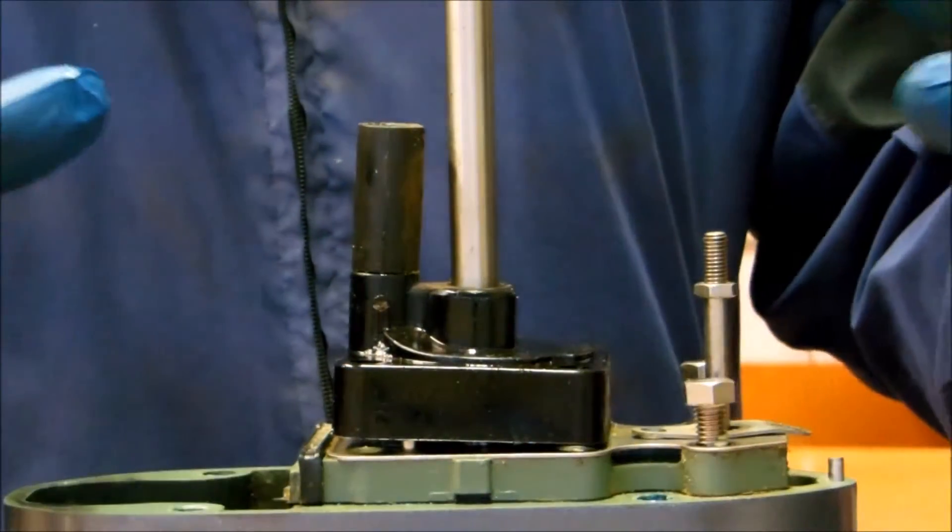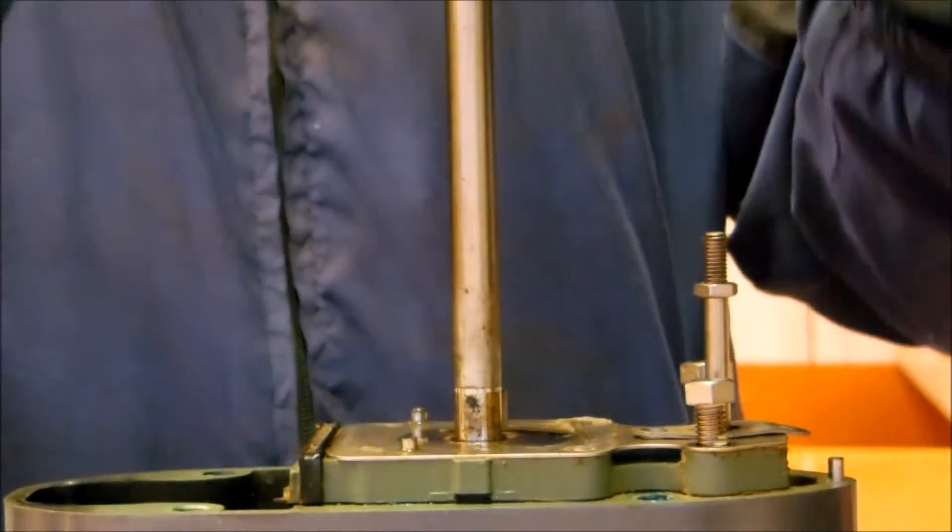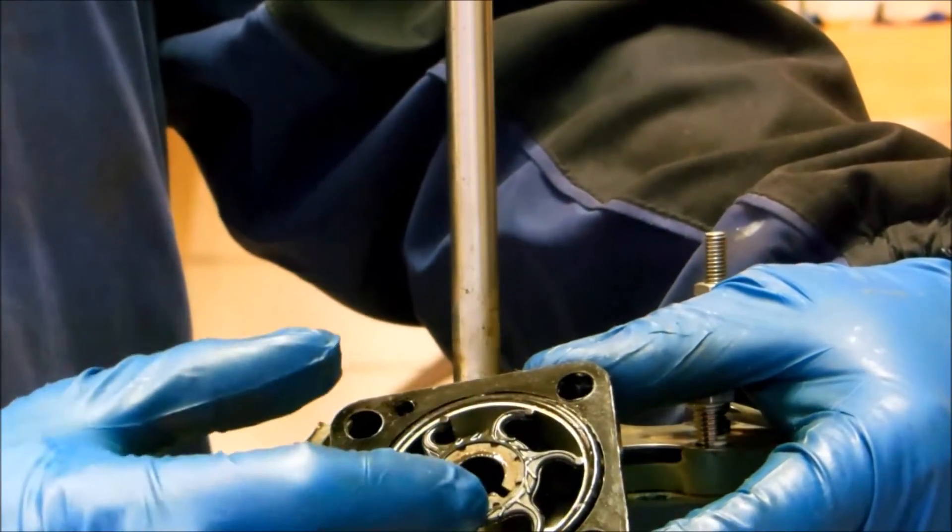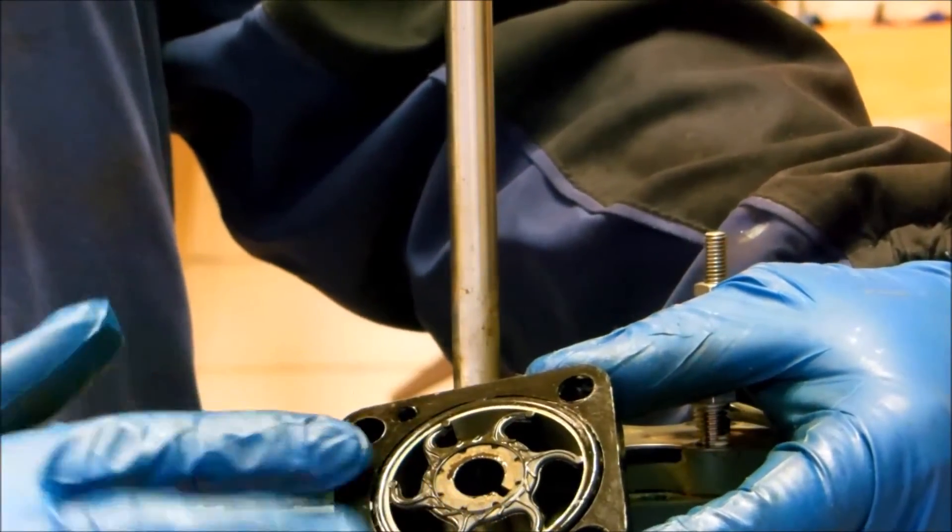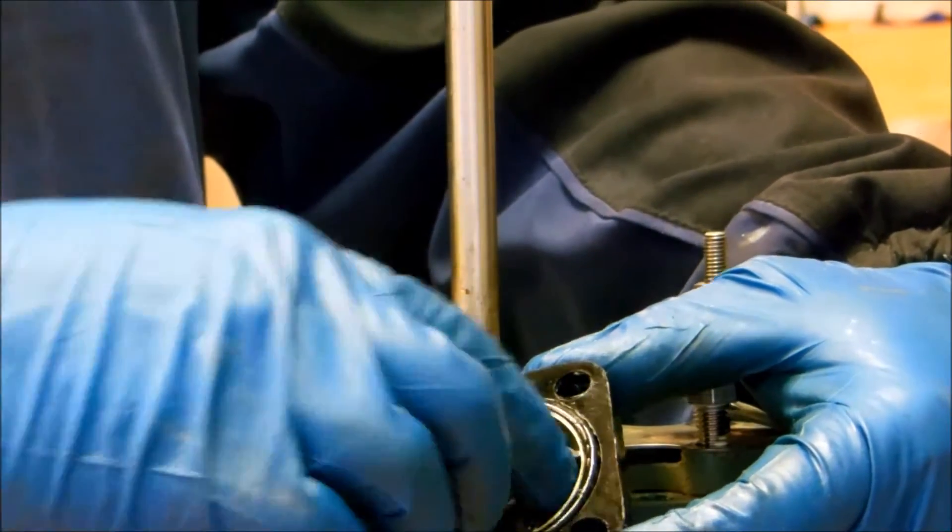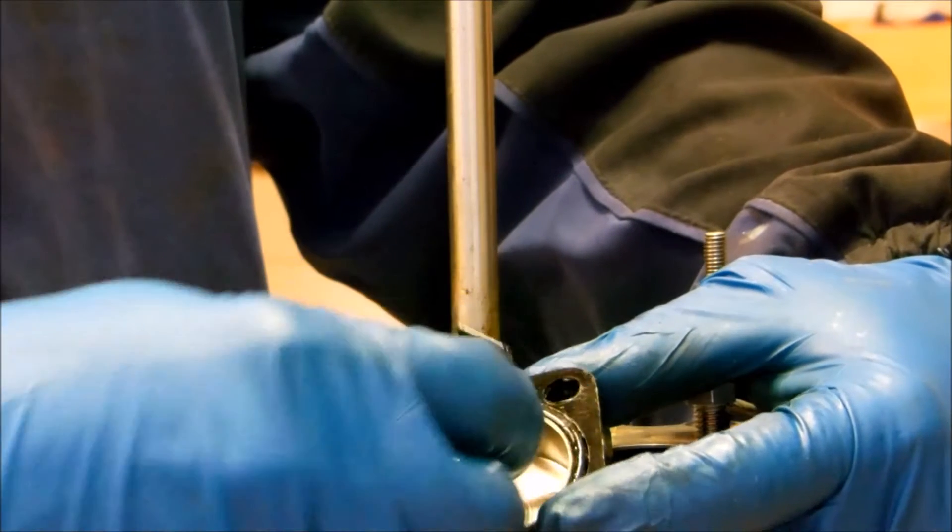So now that the bolts are removed, they're loose, we can pull the top end of the water pump off. Here's the impeller. There's an O-ring that seals the pump body down onto this plate. And now we can pull the impeller out.